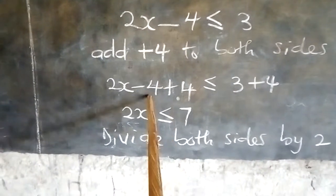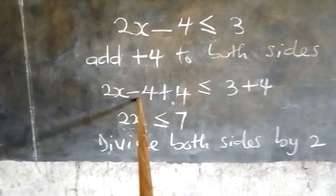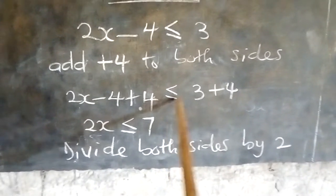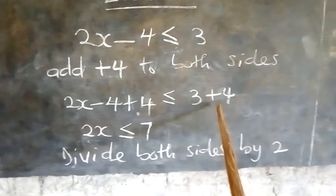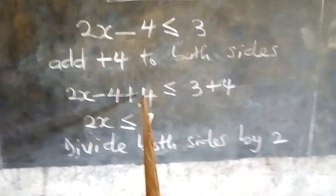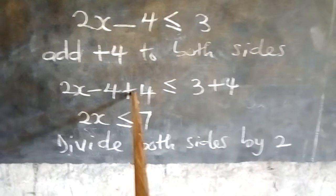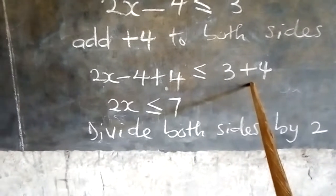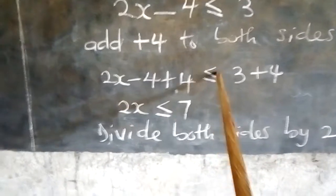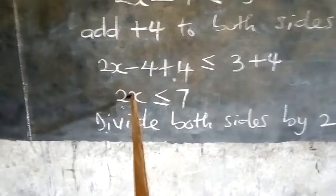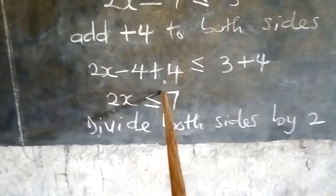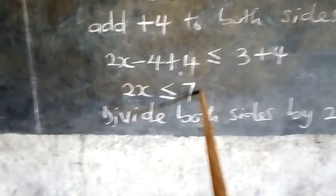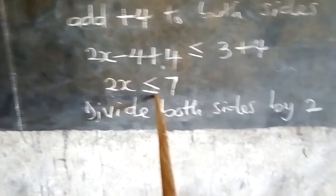Putting this plus 4 into the expression, we have: 2x minus 4 plus 4 less than or equal to 3 plus 4. We add to both sides, not one side alone. This minus 4 plus 4 goes to 0, leaving 2x less than or equal to 3 plus 4, which is 7.